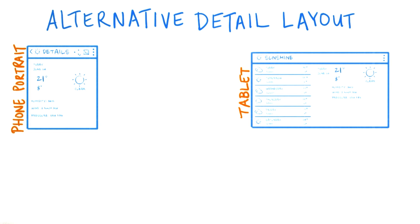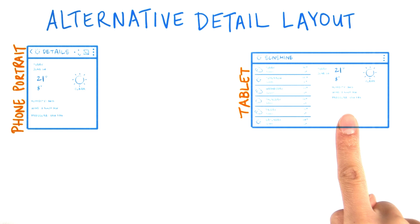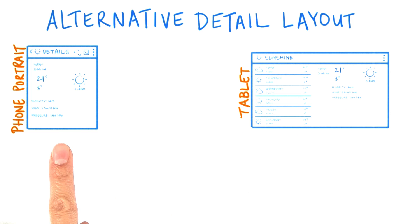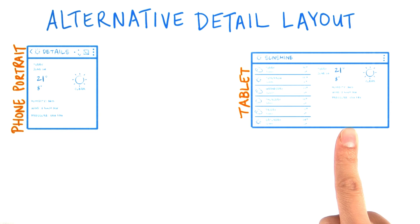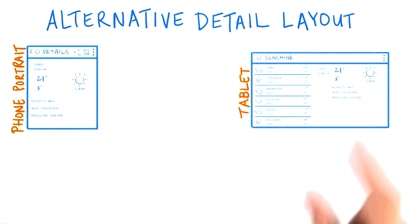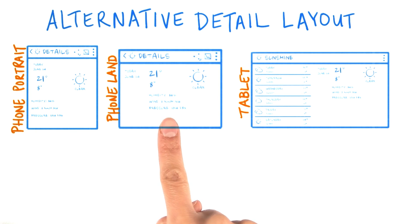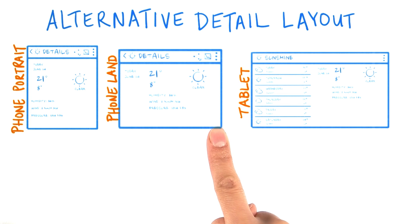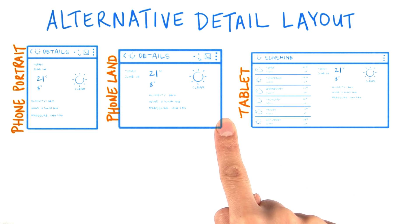We're not quite done yet with implementing the tablet UI wireframes. The detail fragment should look like this, but instead it looks more like this. For the tablet UI, we tried to optimize it more for wider screens like the tablet landscape mode. Another good place for this layout is in the phone landscape view, where there's more horizontal space than vertical space.